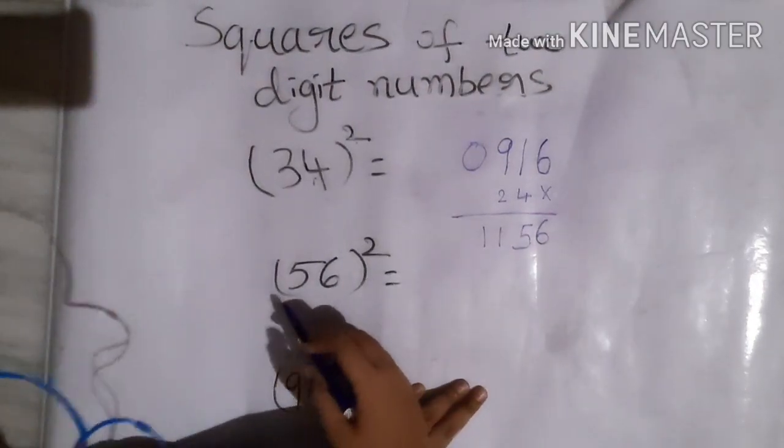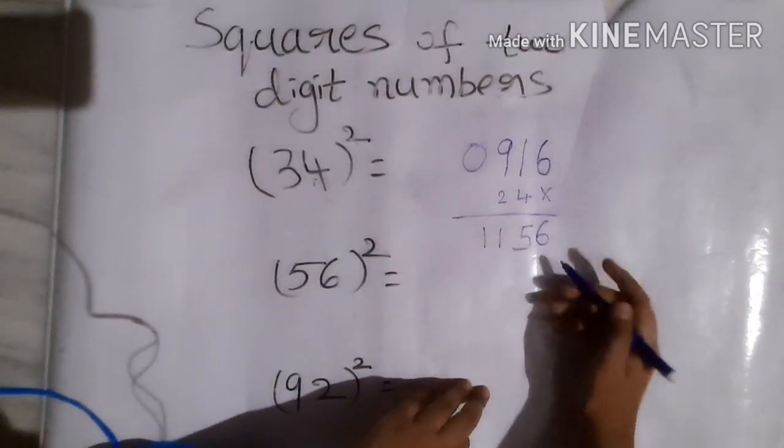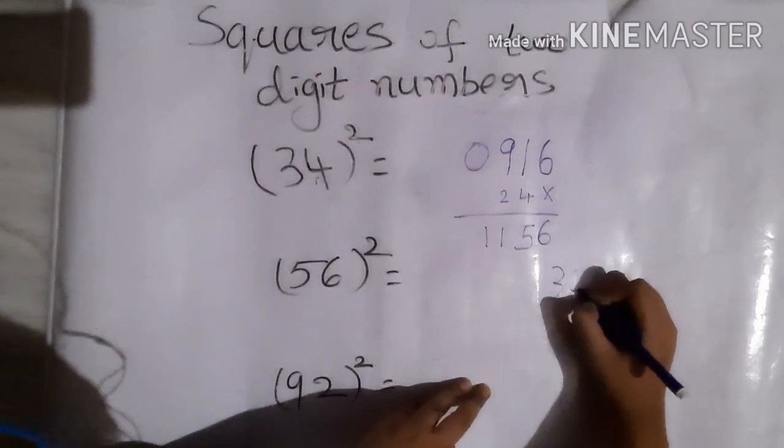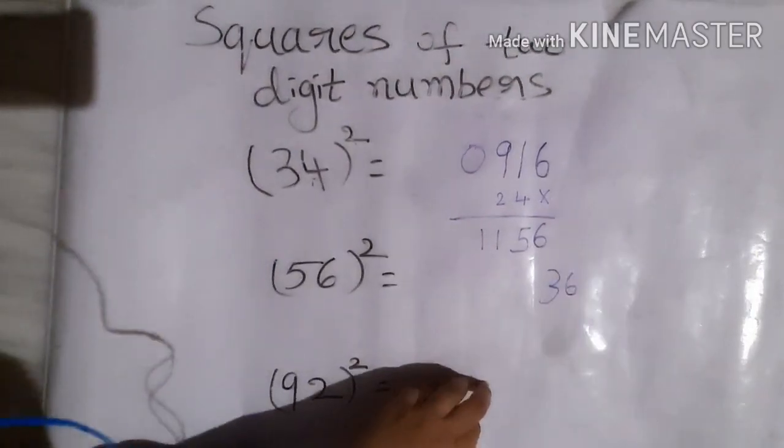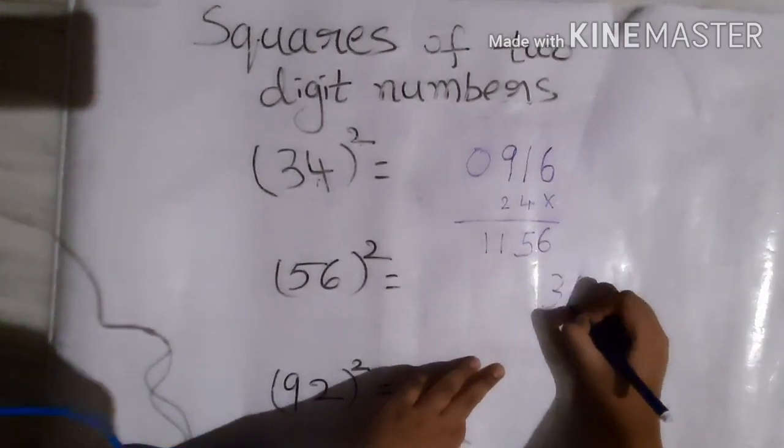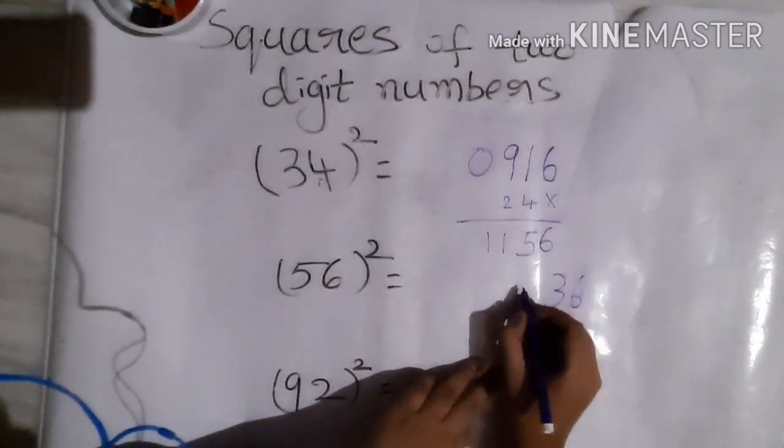And now 56 squared. 6 squared is 36, and 5 squared is 25.